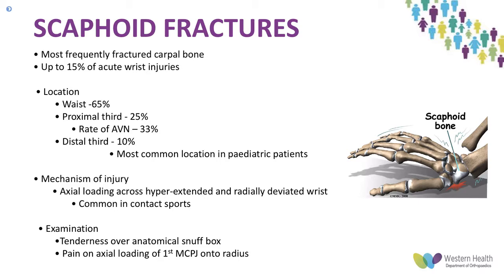The scaphoid is the most frequently fractured carpal bone, and up to about 15% of acute wrist injuries have an associated scaphoid fracture. The most common site of fracture is the waist, accounting for about 65% of fractures. The proximal third, if fractured, carries about a one-third rate of avascular necrosis, and the distal third accounts for only 10% of fractures in adults, though it is the most common location in pediatric patients. These fractures typically occur with axial loading across a hyperextended and radially deviated wrist — a fracture in young, active sport players. Older patients are more likely to fracture their distal radius.